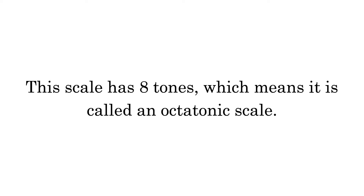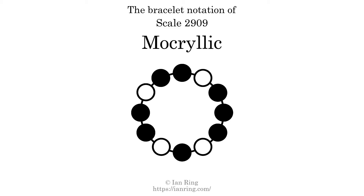This scale has 8 tones, which means it is called an octatonic scale. This is a bracelet notation diagram of scale 2909. The shaded circles represent tones that appear in the scale, and they are read clockwise, starting at the top.